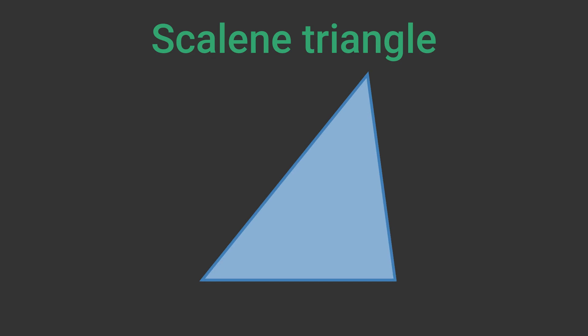Not all shapes have lines of symmetry. For example, a scalene triangle, where all the sides and angles are different, has no lines of symmetry. There is no way to fold the triangle in half so that the two halves match up.